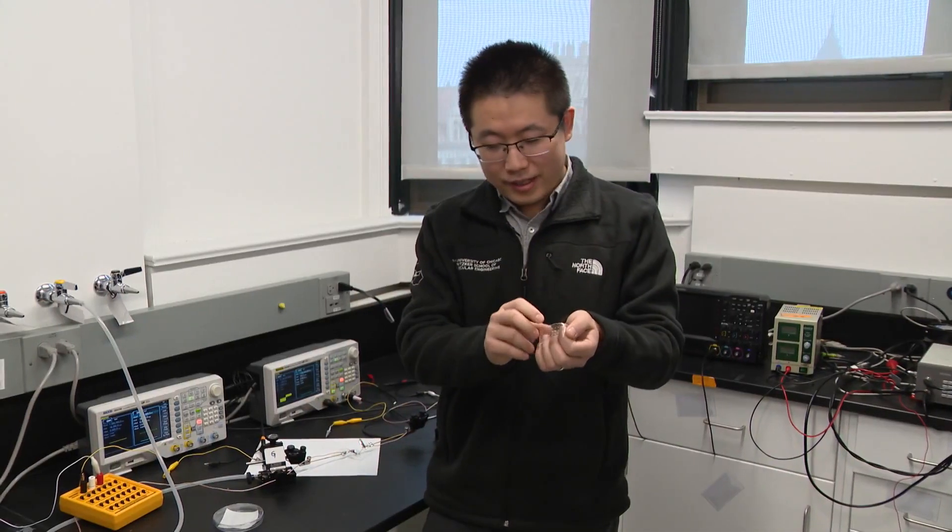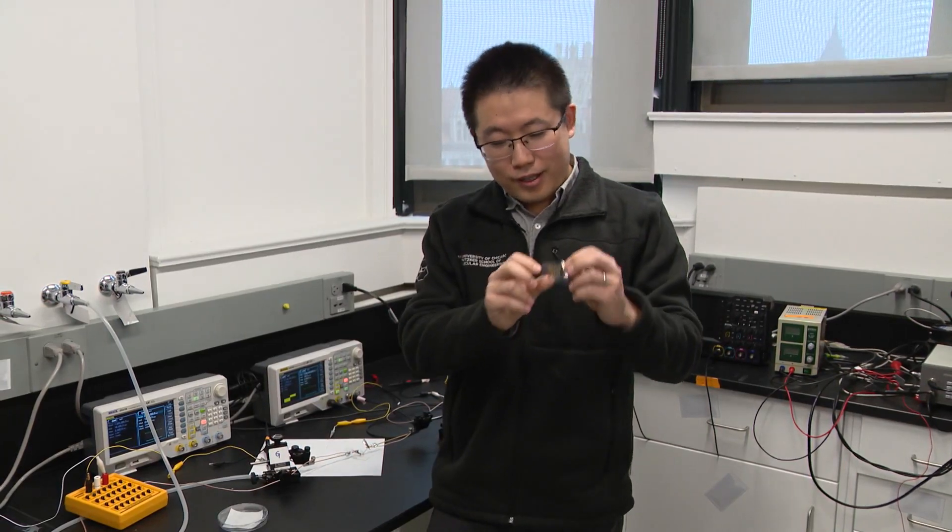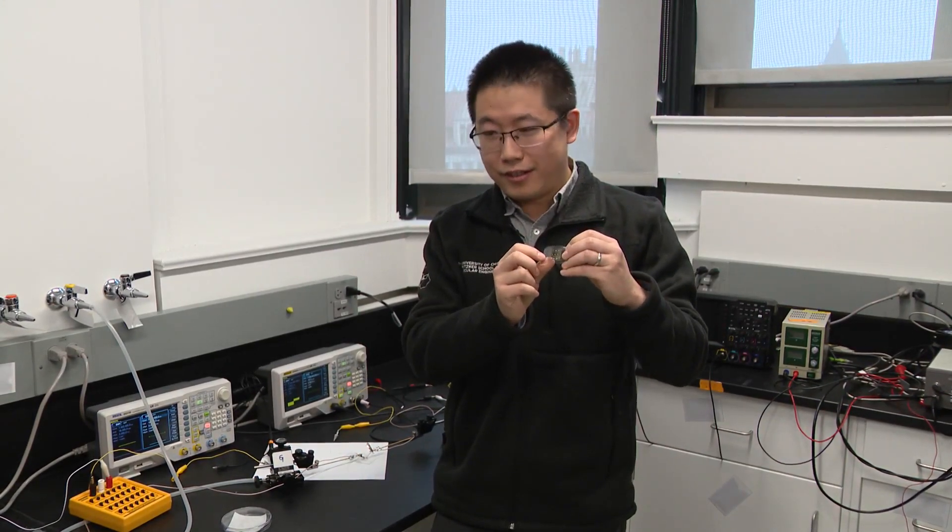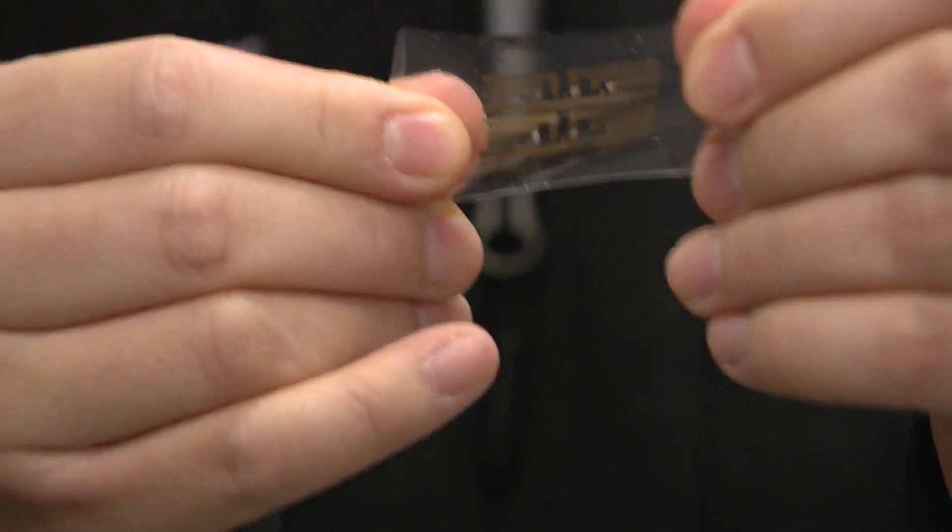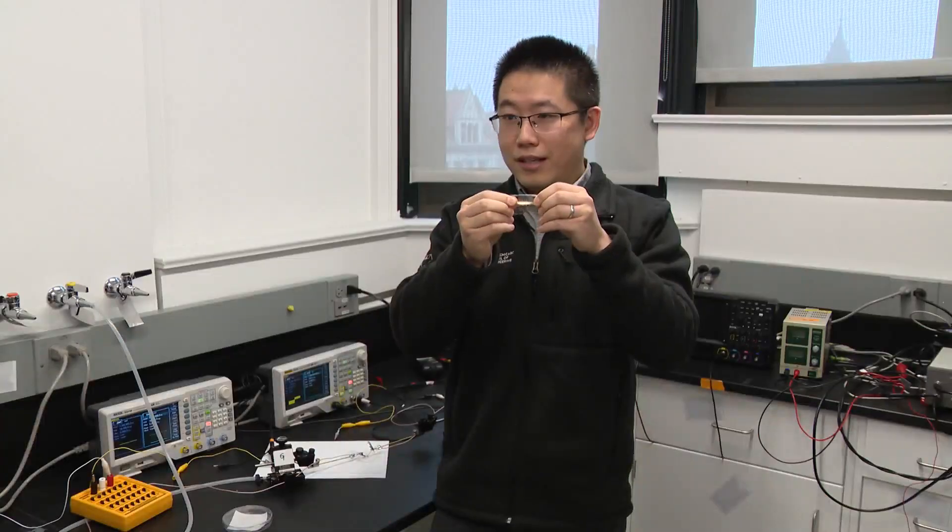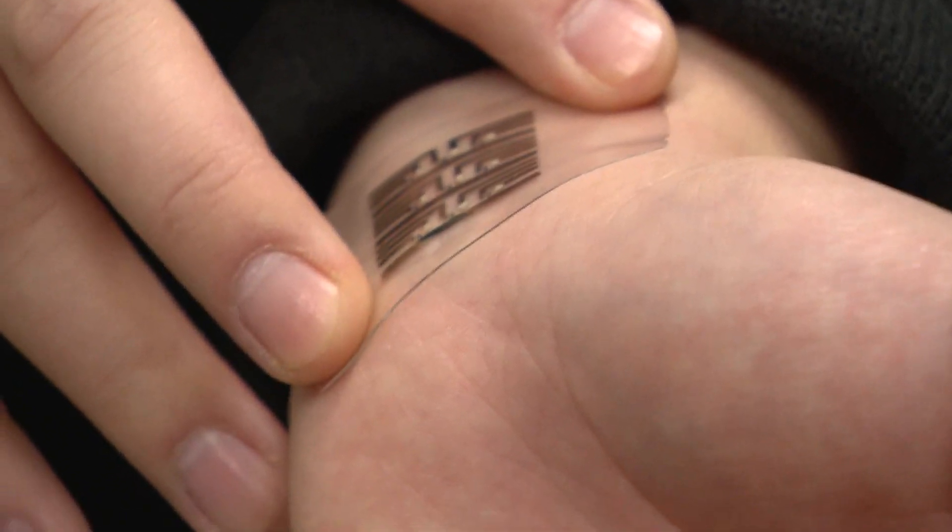Dr. Sihang Wang and his colleagues created a computing chip that functions in a similar way as our brain, but it's even smarter. It's very soft and stretchy, and it can maintain its function. The wearable system integrates seamlessly with the skin.